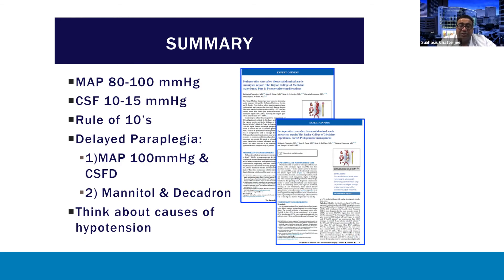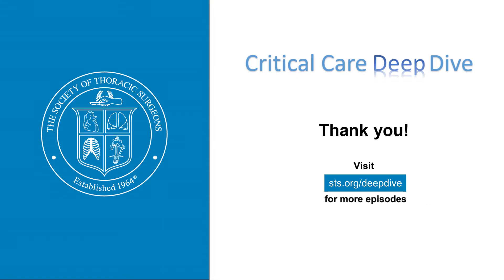In summary, aim for a mean arterial pressure in the 80 to 100 range and CSF pressure between 10 to 15. Remember the rule of tens. For delayed paraplegia, the critical steps are: get a CSF drain in, get the MAP close to 100, use mannitol and decadron, and consider additional measures if needed. When you encounter hypotension, don't treat it blindly with volume or pressors — think about whether there's another cause or etiology that needs to be treated. We recently published our algorithm in the JTCVS with additional detail. Thank you for joining us in this series.